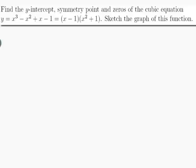The question is find the y-intercept, the symmetry point and the zeros of the cubic equation y equals x cubed minus x squared plus x minus 1, which is equal to x minus 1 times x squared plus 1, and sketch the graph of this function.